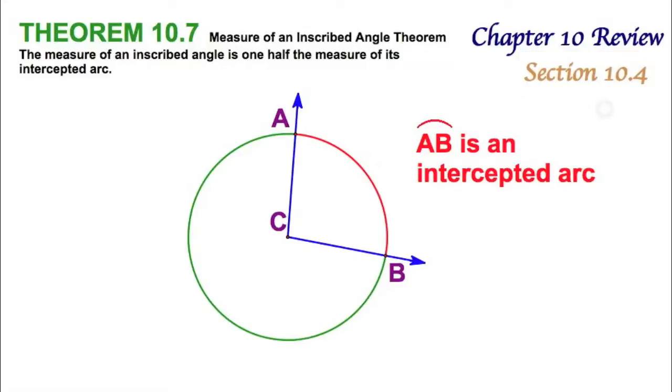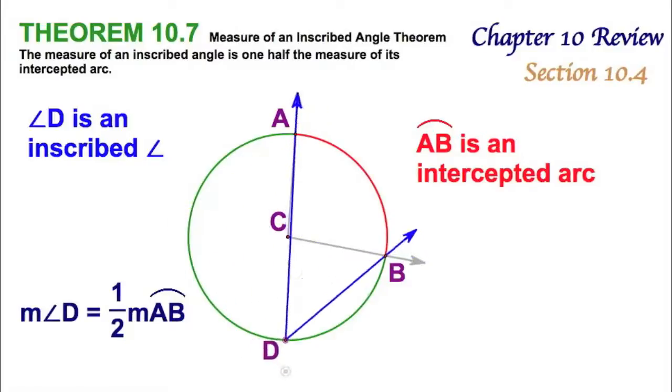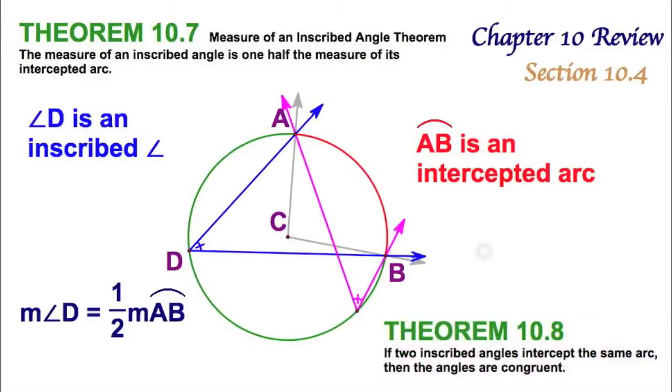Now things pick up steam here in section 10.4. We're going to start with the concept of an intercepted arc. Here, this angle intercepts this red arc. The central angle is equal in measure to the intercepted arc. But if I were to stretch this and move it out here all the way onto the circumference, that's of course called an inscribed angle. And the inscribed angle is going to be exactly half the arc. That's a big concept - we really need to know that one.